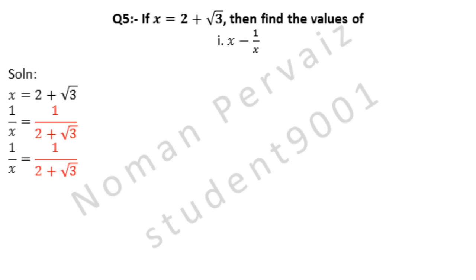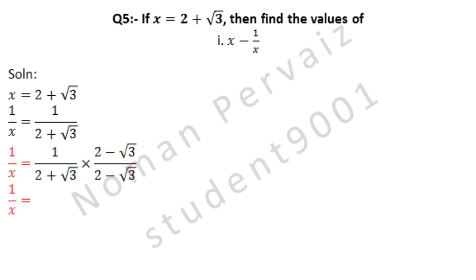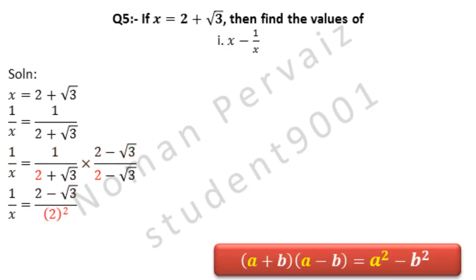Next we will multiply and divide by the conjugate of the denominator. The denominator is indicated in blue color, which is 2 plus under root 3, so its conjugate will be 2 minus under root 3. We have multiplied and divided with the conjugate, which is 2 minus under root 3. Here, we are going to apply the formula: (a + b)(a − b) = a² − b². In our question, a is 2 and b is under root 3.